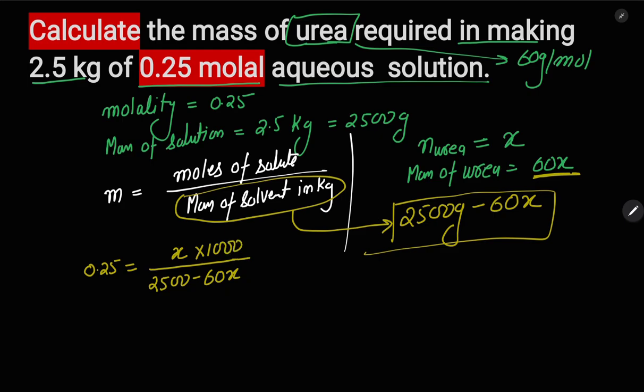On solving this, we get 625 minus 15x equals 1000x, or x comes out to be 0.6157 mole. So the number of moles of urea are 0.6157, but the question is not about moles, the question is about mass.